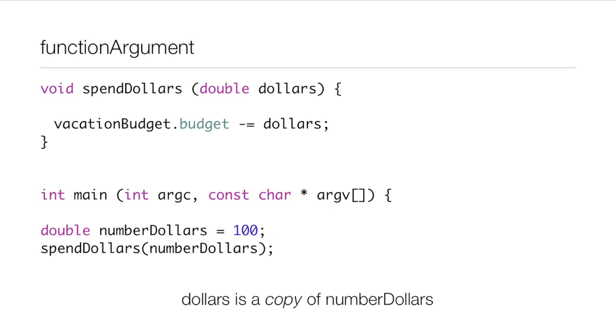SpendDollars initiates the function up above, so it jumps up there and says, 'Hey, wake up, you've been called into action.' So it starts running the function void spendDollars. It goes through and sees vacationBudget.budget -= dollars.